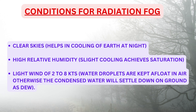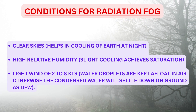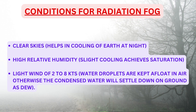The conditions necessary to form radiation fog are three. First, clear skies — this helps in cooling of the earth at night; if it is a cloudy sky, the earth will not cool down and clouds will reflect energy back to the earth. Second, high relative humidity — to ensure that slight cooling of the air achieves saturation. Third, light winds of two to eight knots — this is required to keep water droplets afloat in the air. Without wind, condensed water will settle on the ground as dew.